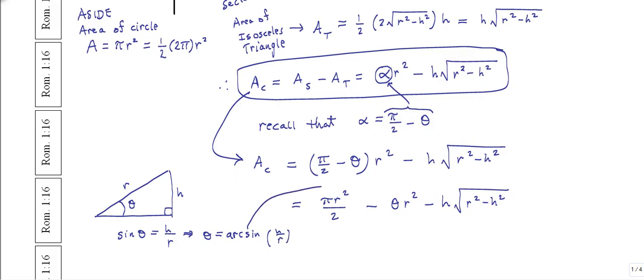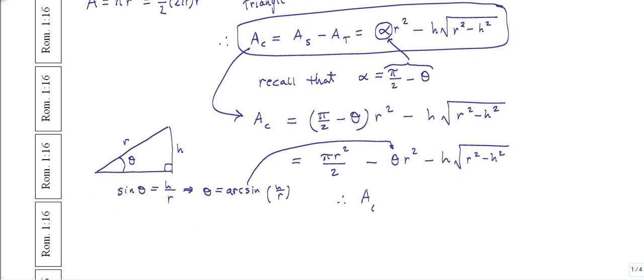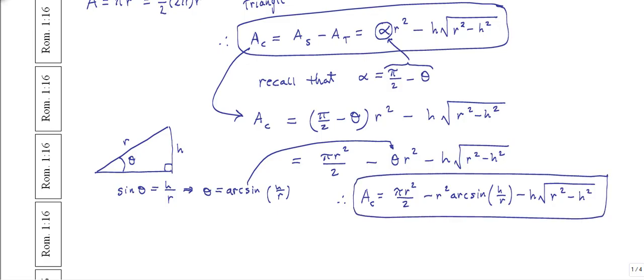And that's what I'm going to stick in for that result. And so therefore, a sub c is equal to pi r squared over 2 minus r squared times arc sine of h over r minus h times radical r squared minus h squared. And this is in fact the very same thing that we showed in the last video using some techniques from calculus.